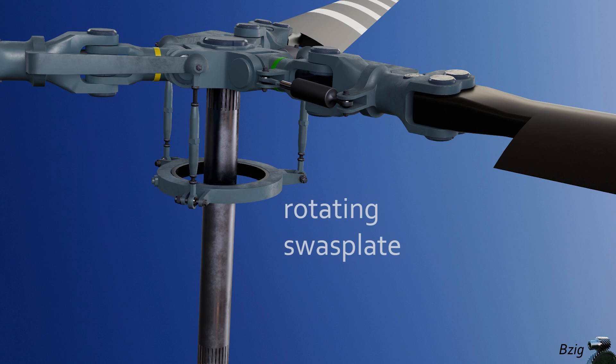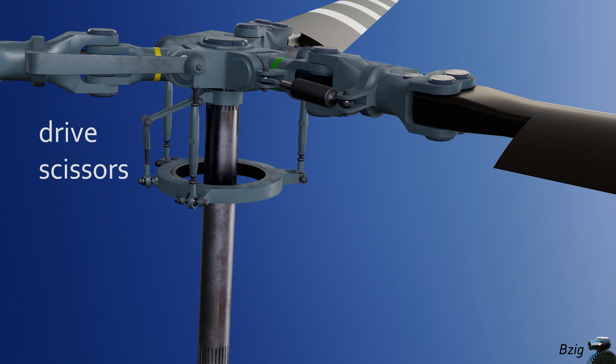A device called the rotating swashplate is connected to the bottom of the pitch change links. The rotating swashplate needs to have a drive mechanism to force it to rotate along with the mast and hub, and this mechanism is called the drive scissors. So these are all of the rotating controls.